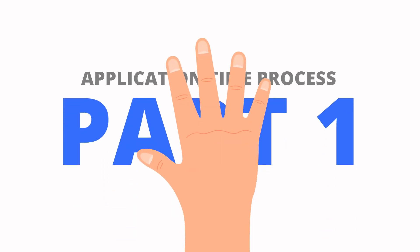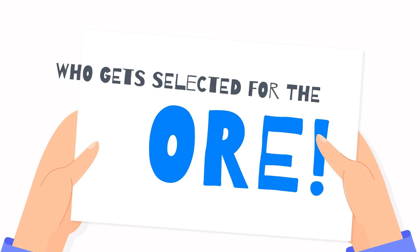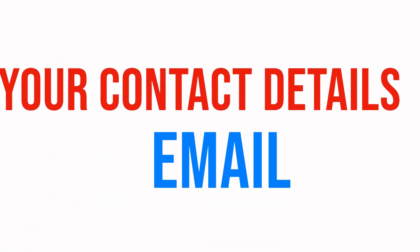How long does it take to be placed on the part one ORE exam? Part one is available for booking once you become eligible, but there's no guarantee that a place will become available due to the waiting list. The GDC does not allocate places to particular candidates — the only exception is candidates approaching their five-year limit, who are usually prioritized.